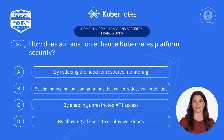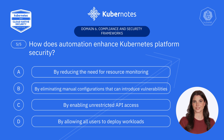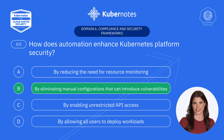Finally, question five. How does automation enhance Kubernetes platform security? A, by reducing the need for resource monitoring. B, by eliminating manual configurations that can introduce vulnerabilities. C, by enabling unrestricted API access. D, by allowing all users to deploy workloads. You got it. It's B, by eliminating manual configurations that can introduce vulnerabilities. Automation reduces human error, ensures consistent security practices, and allows for rapid detection and remediation of potential threats.